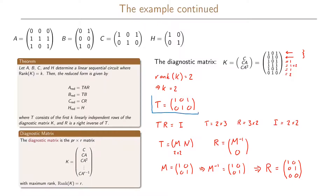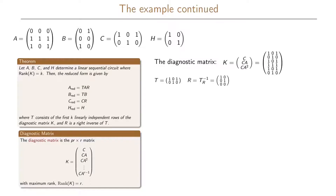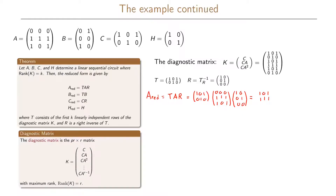We now compute A reduced = T × A × R. T = [1,0,1; 0,1,0], A = [0,0,0; 1,1,1; 1,0,1], and R = [1,0; 0,1; 0,0]. First, T times A gives [1,0,1; 1,1,1]. Then multiplying by R gives A reduced = [1,0; 1,1].